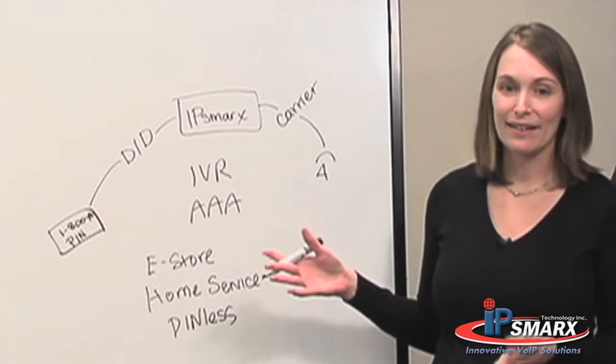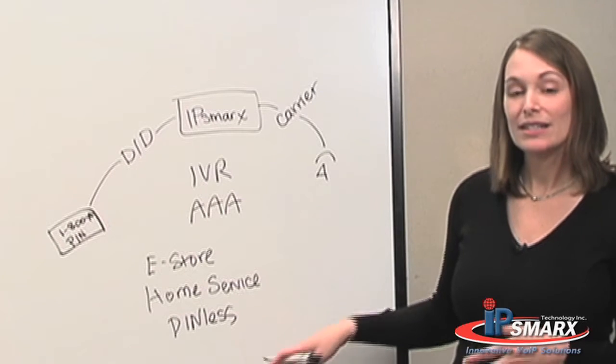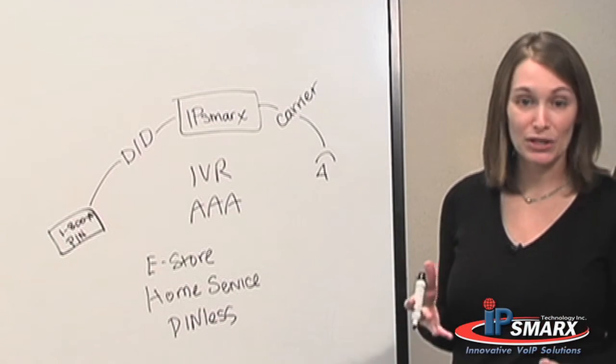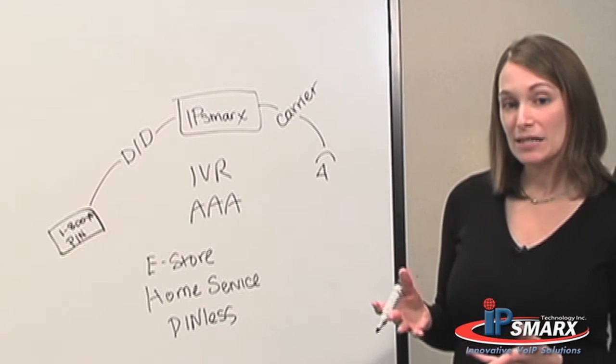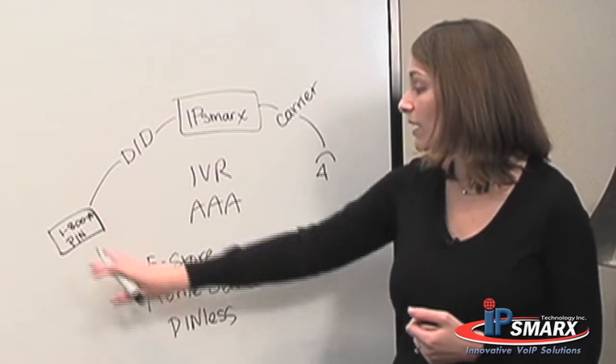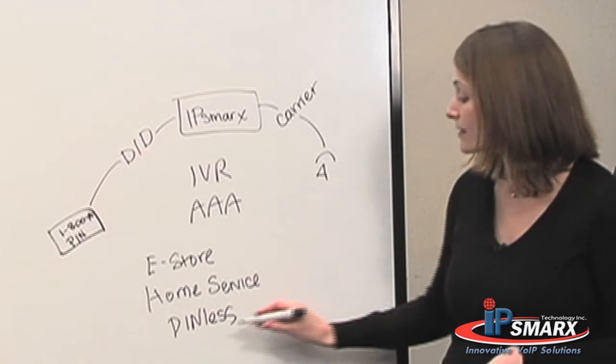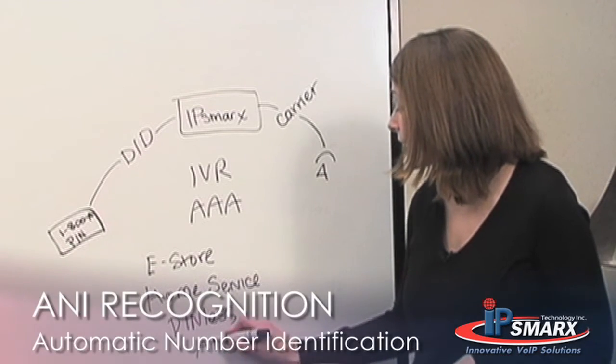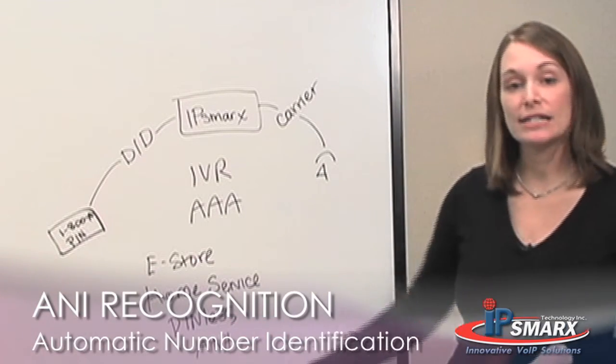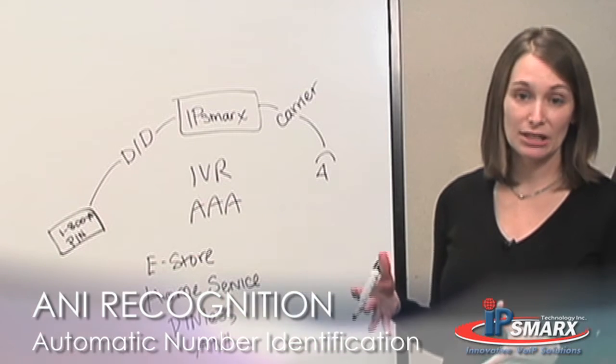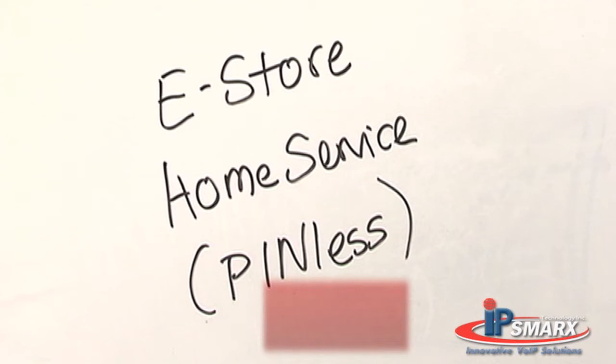With the home service or pinless module, the customer can actually have an account with you. So anytime they'd like to make a call, they would simply dial the local access number. They never have to enter a pin because the system is using what's called ANI or Annie recognition and will actually authenticate the user by the phone number they're dialing from.